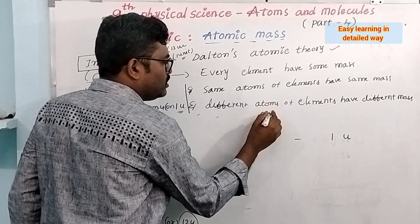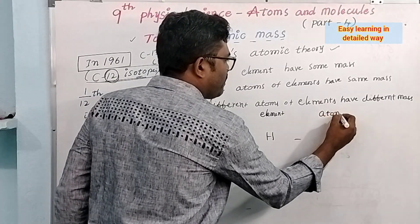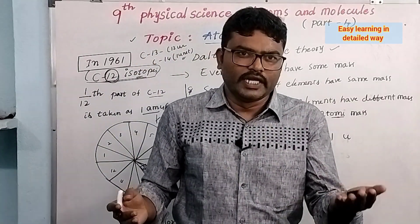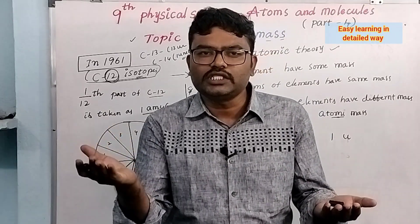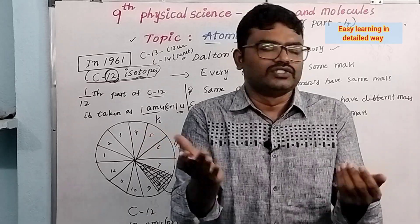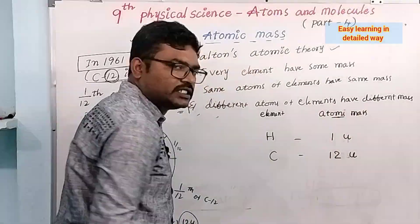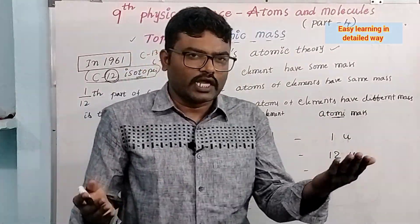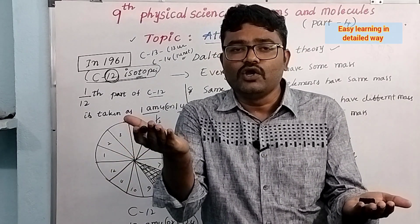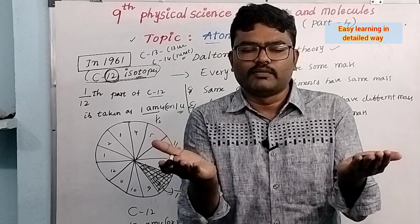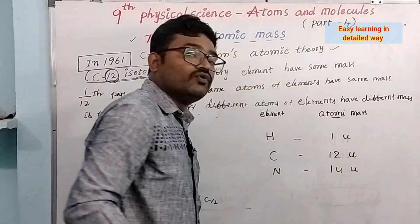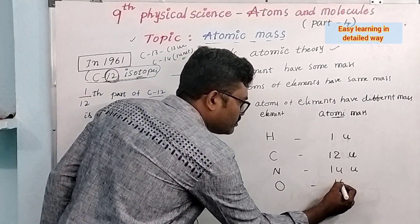In the same way, for carbon, one whole carbon atom compared with 1/12 of carbon-12 — it fits exactly in 12 places, so carbon's atomic mass is 12 unified masses. For nitrogen, comparing with 1/12 of carbon-12, you need 14 such units to weigh equally — we need 14 one-by-twelfths of carbon atoms. That's why nitrogen's atomic mass unit is 14. In the same way, oxygen is 16, so its atomic mass is 16.